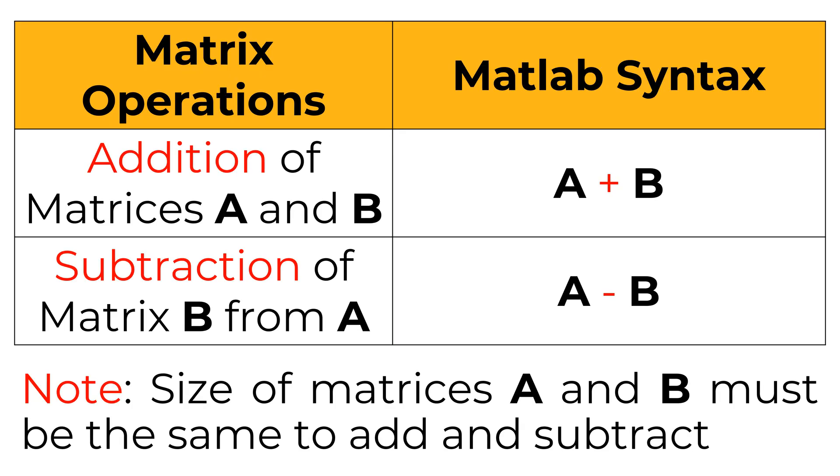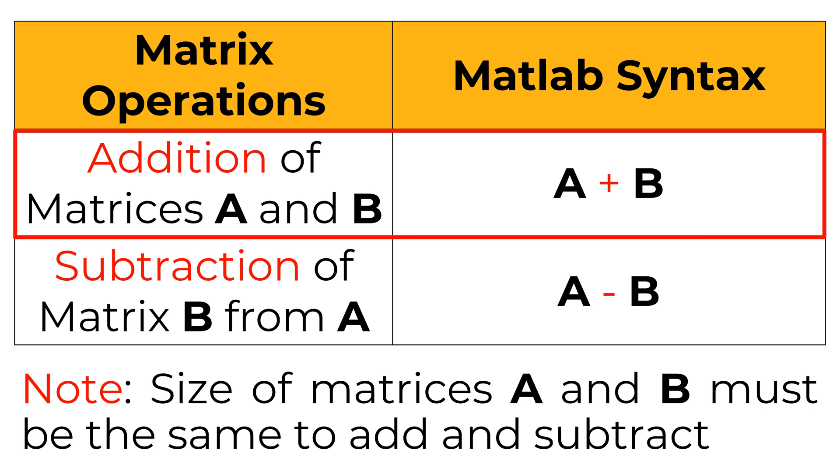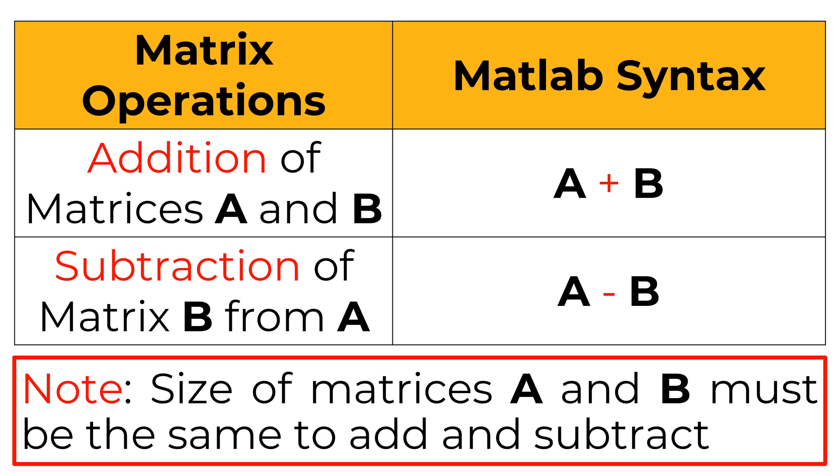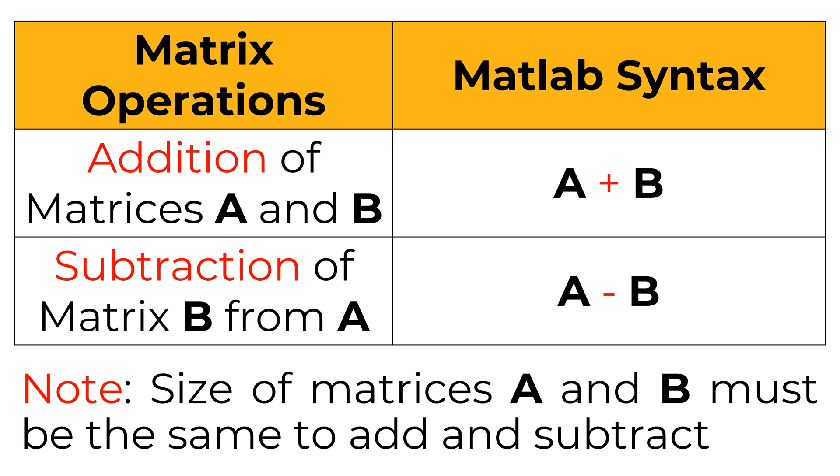Consider the same size of matrix A and B. If you want to add matrices A and B, you can use plus sign between A and B in MATLAB. Similarly, you can use minus sign between A and B if you want to subtract matrix B from A. Remember, the size of matrices A and B must be the same to add or subtract. Otherwise, it will give you an error message. The resulting matrix size is the same size of matrix A or B.